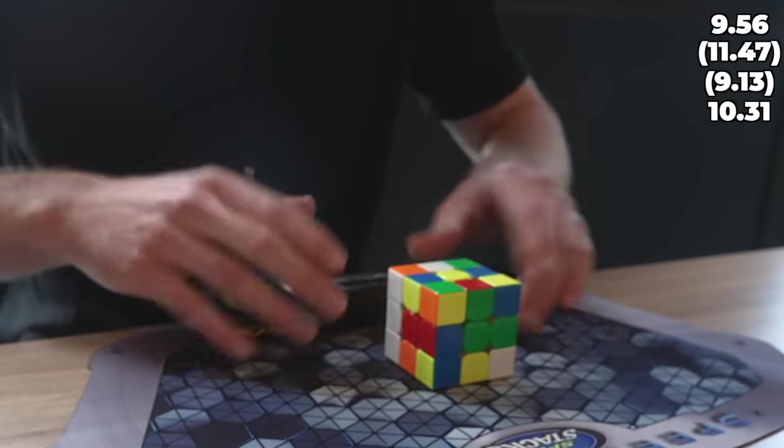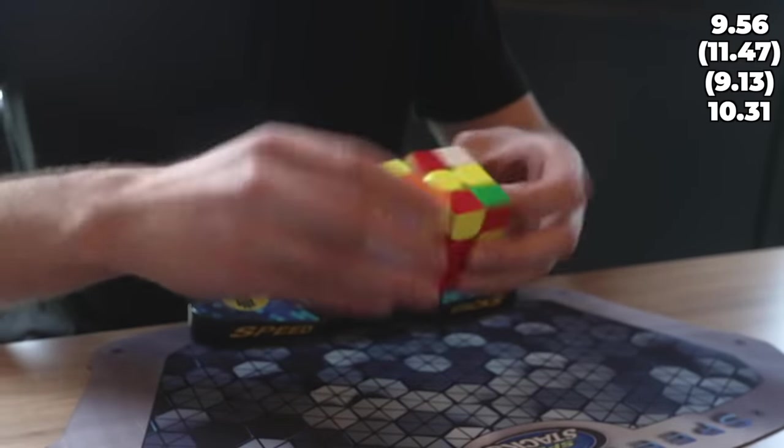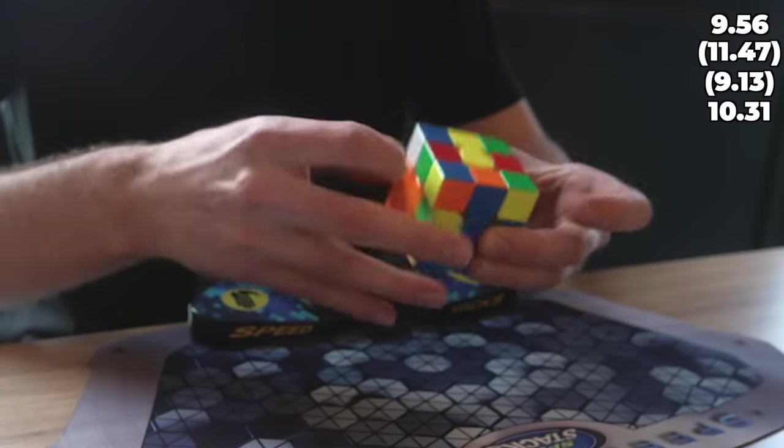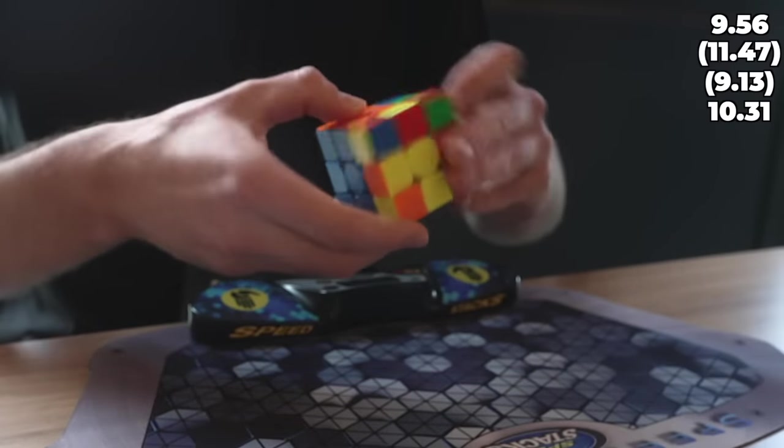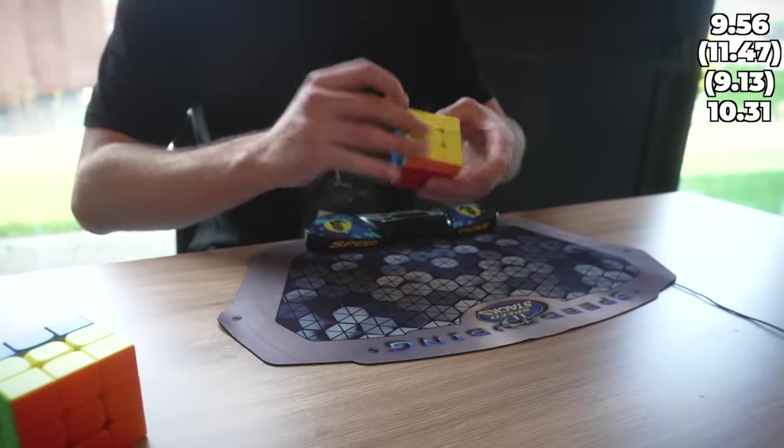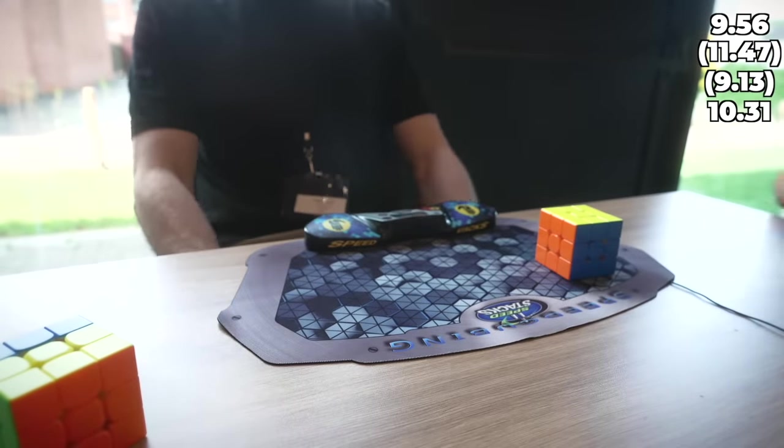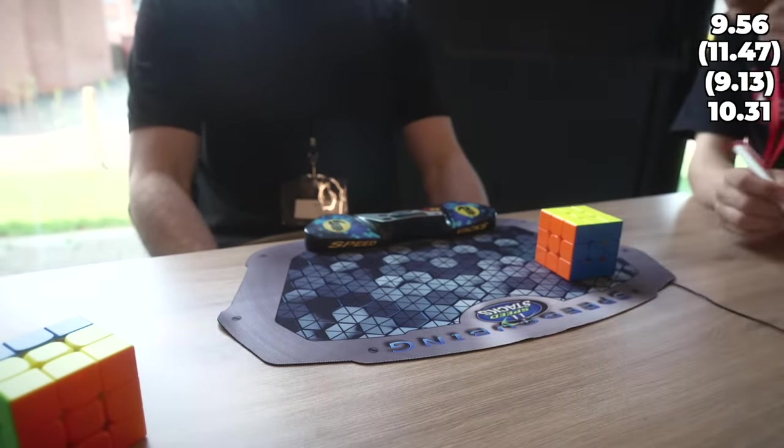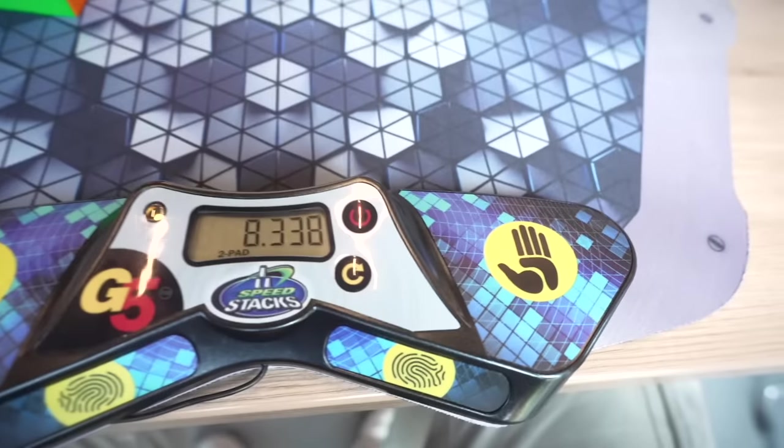Here we go, it seems like I have a pretty solid start of the solve although I messed up the third pair. The last pair was pretty good, OLL and T perm really solid last layer. Once again this seemed to be a pretty good solve, let's see what it is. Your boy still got it, 8.3 which is pretty good for a full step even for me.